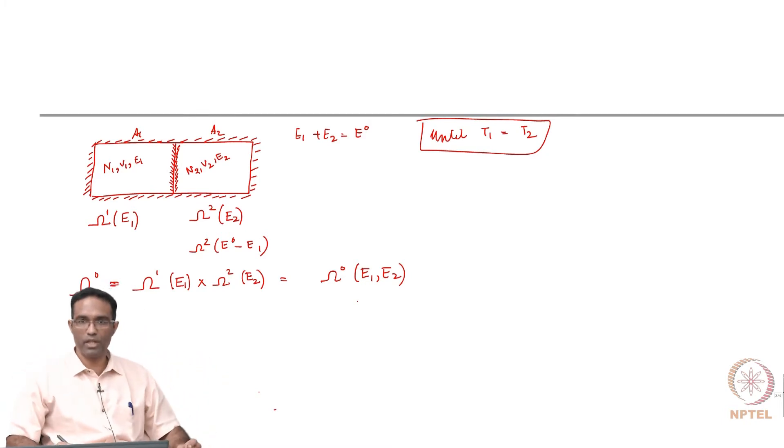Once equilibrium is reached, the number of ways in which the system can actually arrange itself is the one which has the maximum value, and therefore the probability that you will see it in that system is the highest.